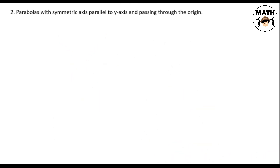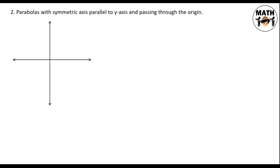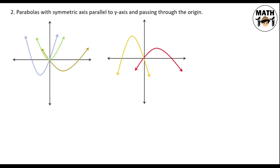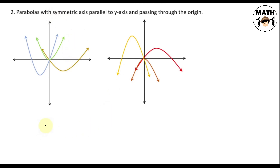Problem number 2: Parabolas with axis parallel to the y-axis and passing through the origin. When the symmetric axis is parallel to the y-axis, the parabola faces upward or downward. Let's draw representative curves: one is a parabola with vertex on the origin, then a parabola to the left of the y-axis passing through the origin, another facing upward to the right of the y-axis, and a parabola facing downward. The differences among all these parabolas are the locations of their vertices and the different values of a — the distance from the vertex to the focus. To represent this parabola, what equation will we use?